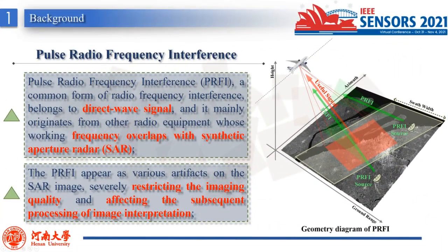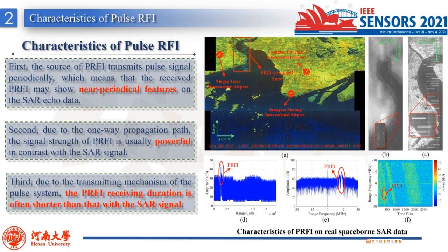The existence of pulse radio frequency interference severely affects the signal processing and image interpretation of synthetic aperture radar, which cannot be ignored. PRFI, a common form of radio frequency interference, belongs to direct-view signal, and it mainly originates from other radio equipment whose working frequency overlaps with synthetic aperture radar. The PRFI appears as artifacts on the SAR image, severely restricting the imaging quality and affecting subsequent image interpretation processing.